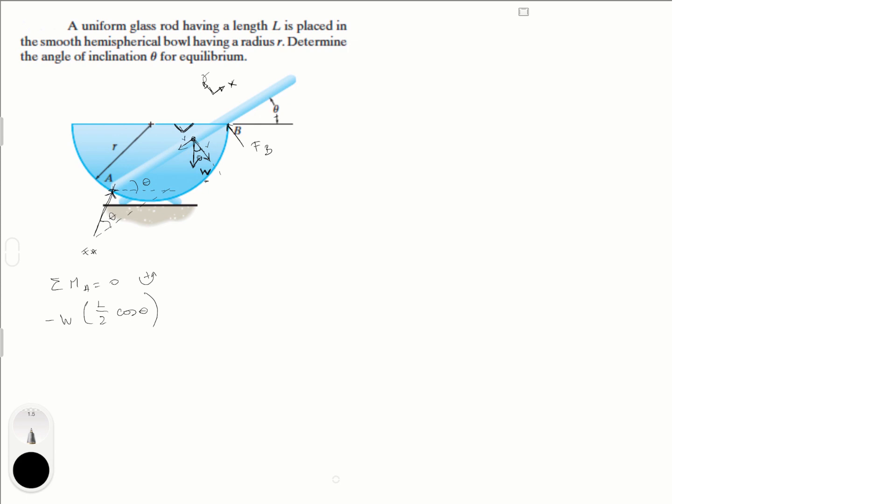This W can be divided into two components. This component and this component. But this component is generating a moment. This component is not. So that's basically what we're trying to find, which is W times L over 2 cosine of theta. L over 2 cosine of theta is also this distance right here. W times cosine of theta is this component of the force. And L over 2 is the distance to calculate the moment.